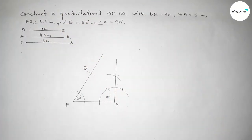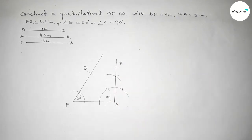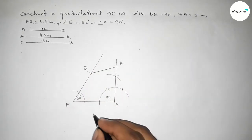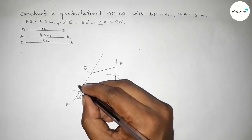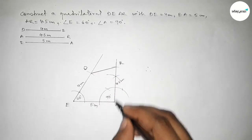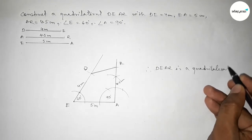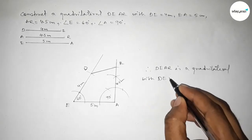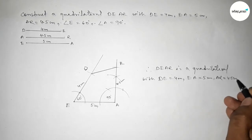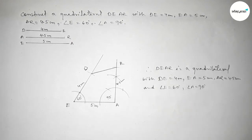Next taking the length AR equal to 4.5 centimeter using the compass, putting the compass on point A and cutting here to mark point R. Now joining D and R. So this side is 5 centimeter, this side is 4 centimeter, and this side is 4.5 centimeter. Therefore, quadrilateral DEAR is constructed with DE equal to 4 centimeter, EA equal to 5 centimeter, AR equal to 4.5 centimeter, angle E equal to 60 degree, and angle A equal to 90 degree.